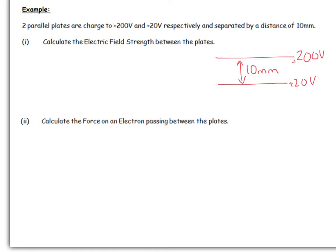In terms of stating the equation, because one of them is not grounded here, we can't use exactly the same equation. We have to revert to a slightly more complex version. Delta V over d, which in this case is going to be 200 minus 20 divided by 10 times 10 to the minus 3 because it's in millimeters, and that ends up as being 1.8 times 10 to the 4 newtons per coulomb.